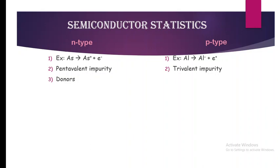Such atoms are called donors. For p-type semiconductors they are accepting the electron — a hole is created — and that's why these are called acceptors.